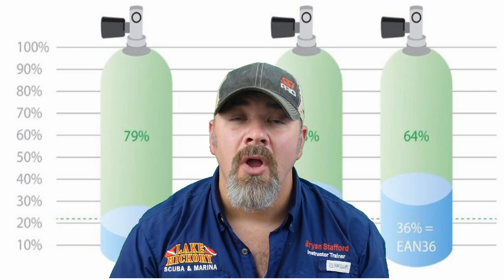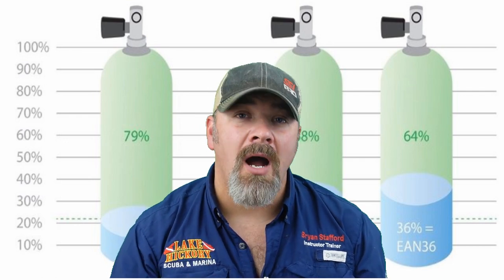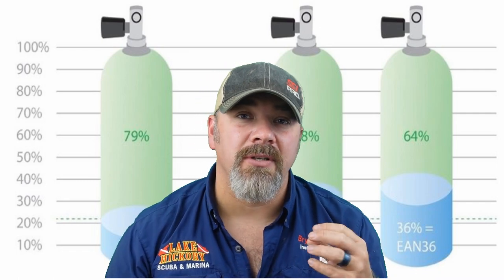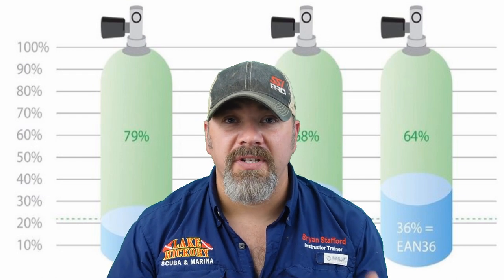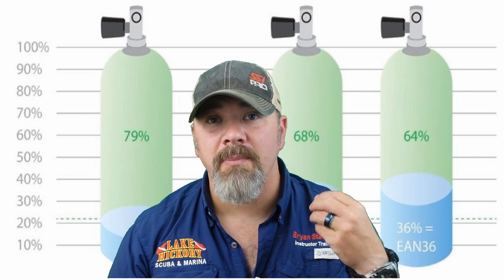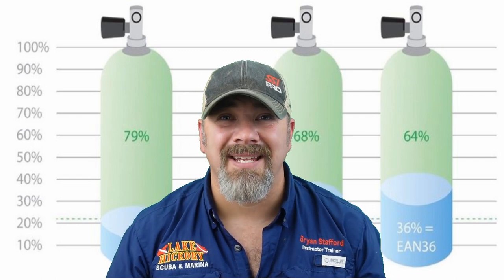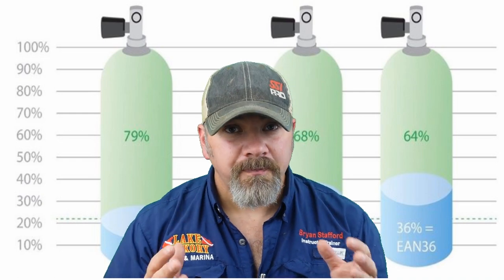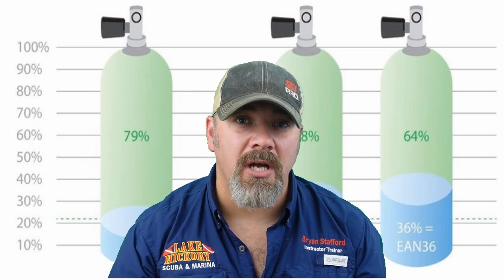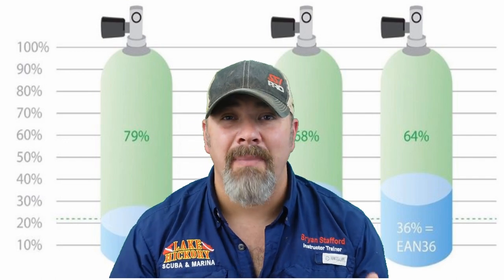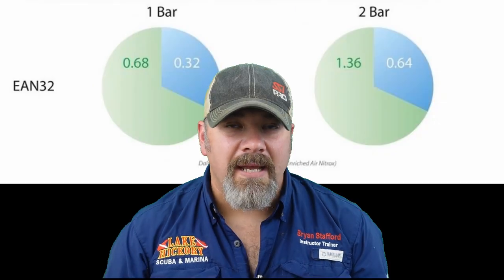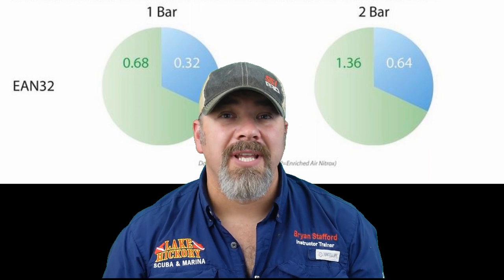In nitrox 32, 32% is the oxygen partial pressure — that's actually how we get the name 'nitrox 32' — and 68% is your nitrogen partial pressure. We can use these numbers to calculate maximum operating depth, best mix, and more. Partial pressure simply refers to whatever the oxygen or nitrogen content is that makes up that standard breathing gas or enriched air nitrox.